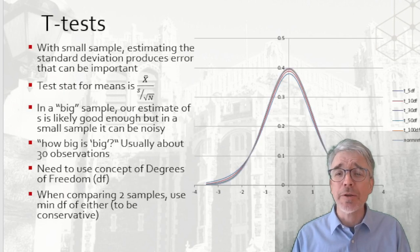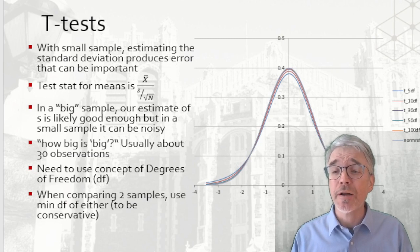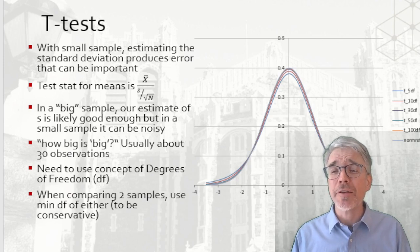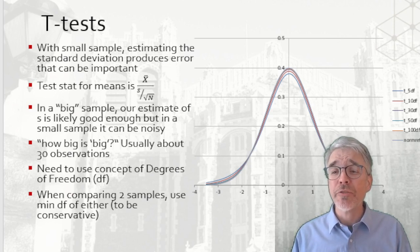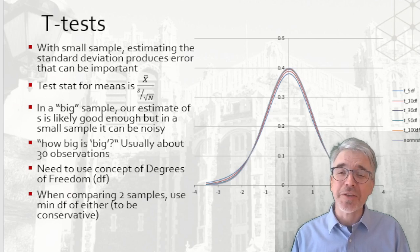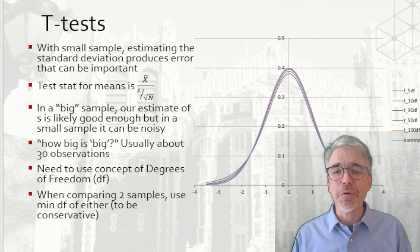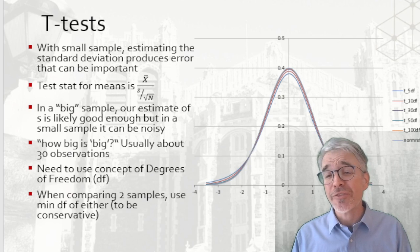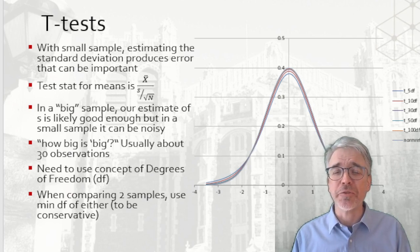The final detail about doing a hypothesis test is with a small sample. Our test statistic for a mean is x-bar divided by s over the square root of n, where I'm estimating s. In a large sample, that estimate of s is going to be good enough. But with a small sample, I do have to worry about that additional variation from the estimate. How small is small? For this case, we have a simpler answer: typically 30 observations is considered a small sample.